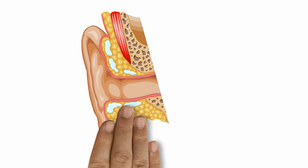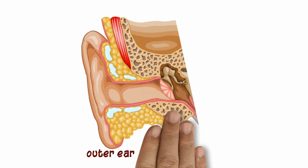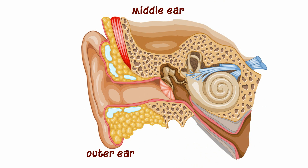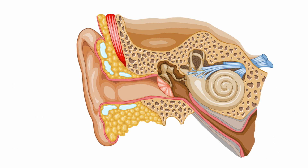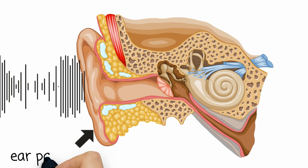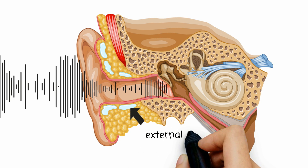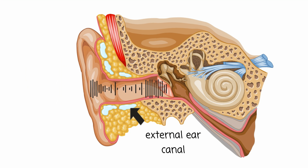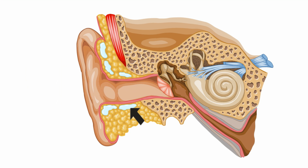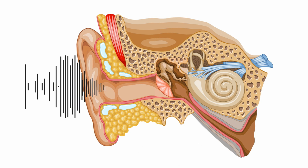The human auditory system is composed of three parts: the outer ear, the middle ear, and the inner ear. The sound waves are picked up by the ear pavilion of the outer ear. They are then amplified and transmitted to the middle ear through the external ear canal.